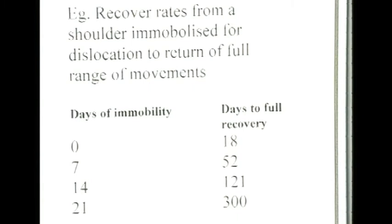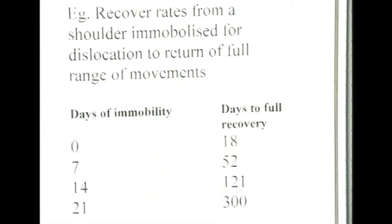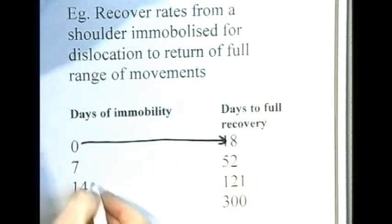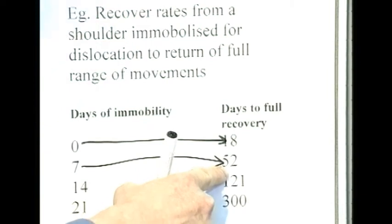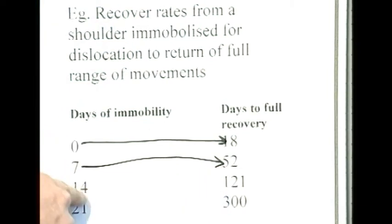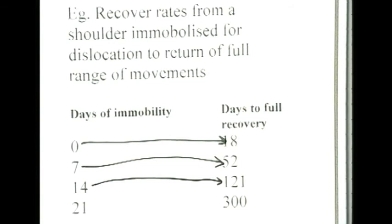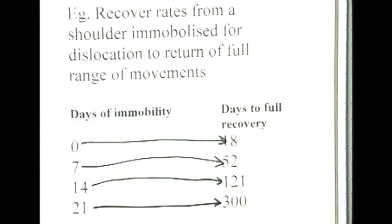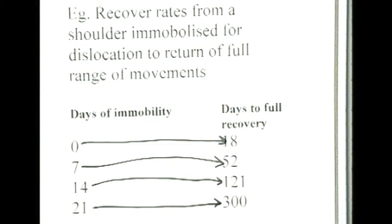If the shoulder is immobilized for seven days, it takes 52 days to recover to full activity. If immobilized for 14 days, the time goes up quite dramatically — 121 days before it can move through its complete full range of movements. And if immobilized for three weeks — 21 days — then an incredible 300 days to return to full activity. So days of immobilization take tens of days, several weeks, to recover from. This shows how important it is to minimize the time of immobility of part of the body or the whole body.